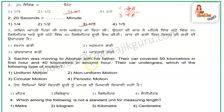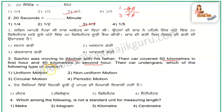The next question: Sachin was moving to Abhor with his father. Their car covered 50 km in the first hour, and a different distance in the next hour. Their car undergoes which type of motion? The answer is non-uniform motion.